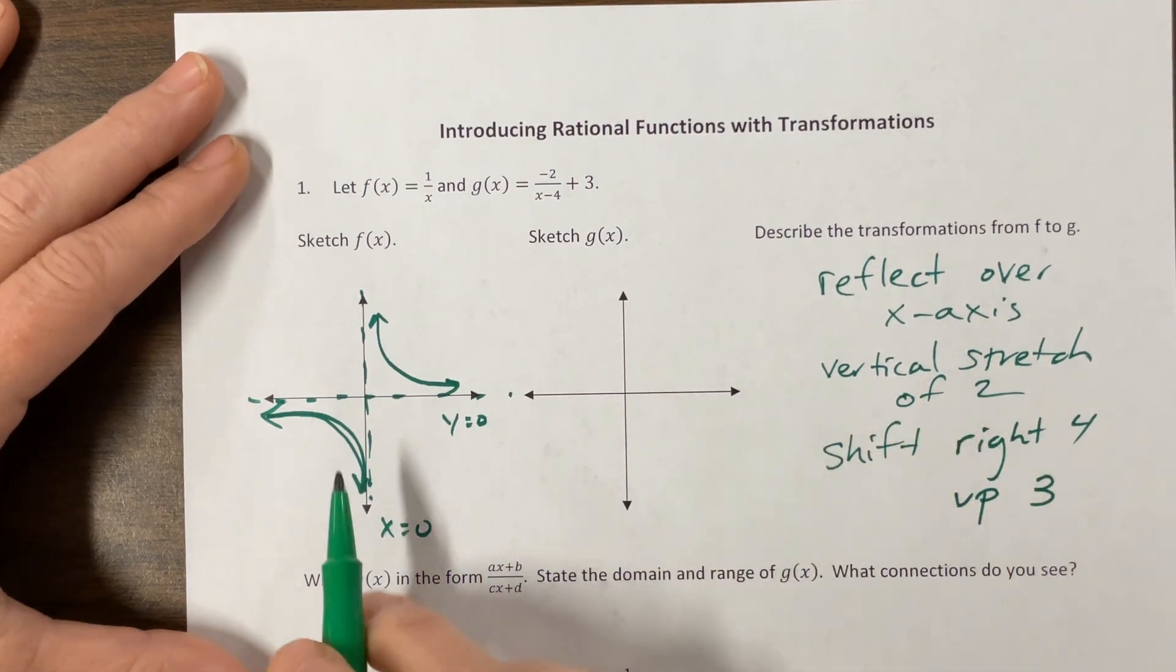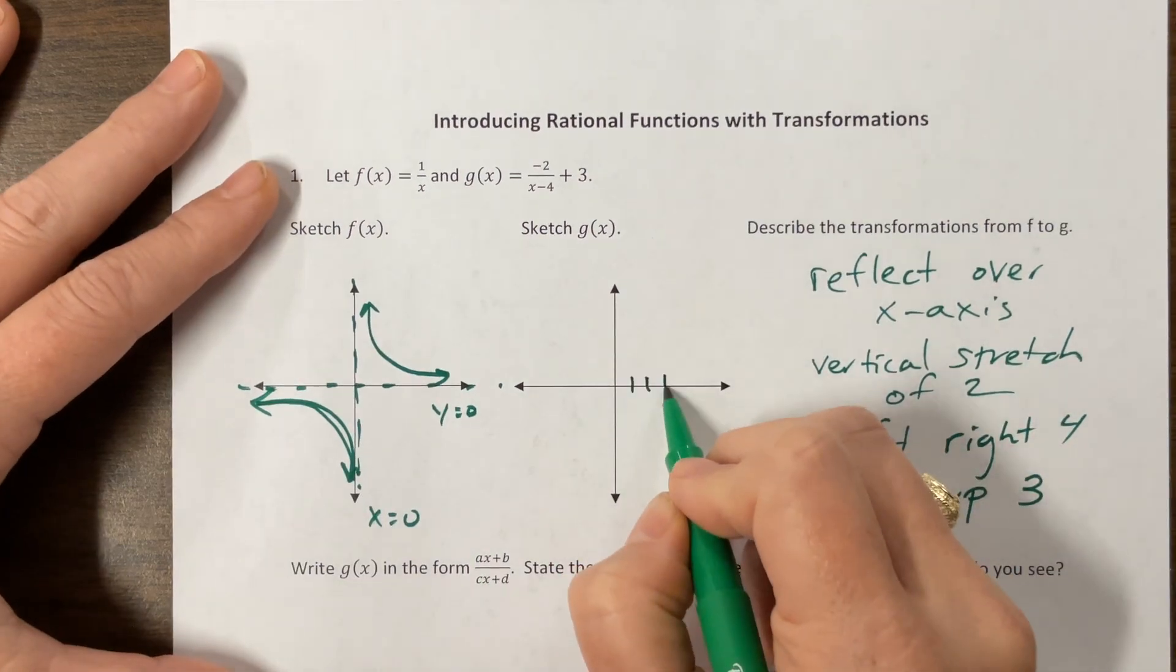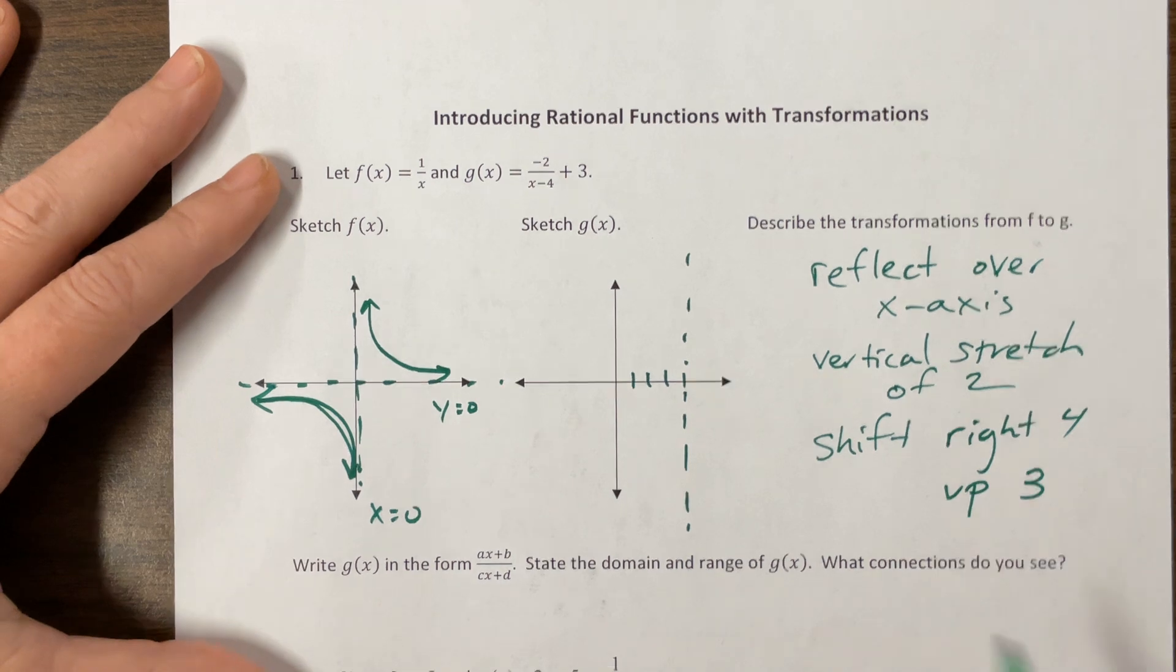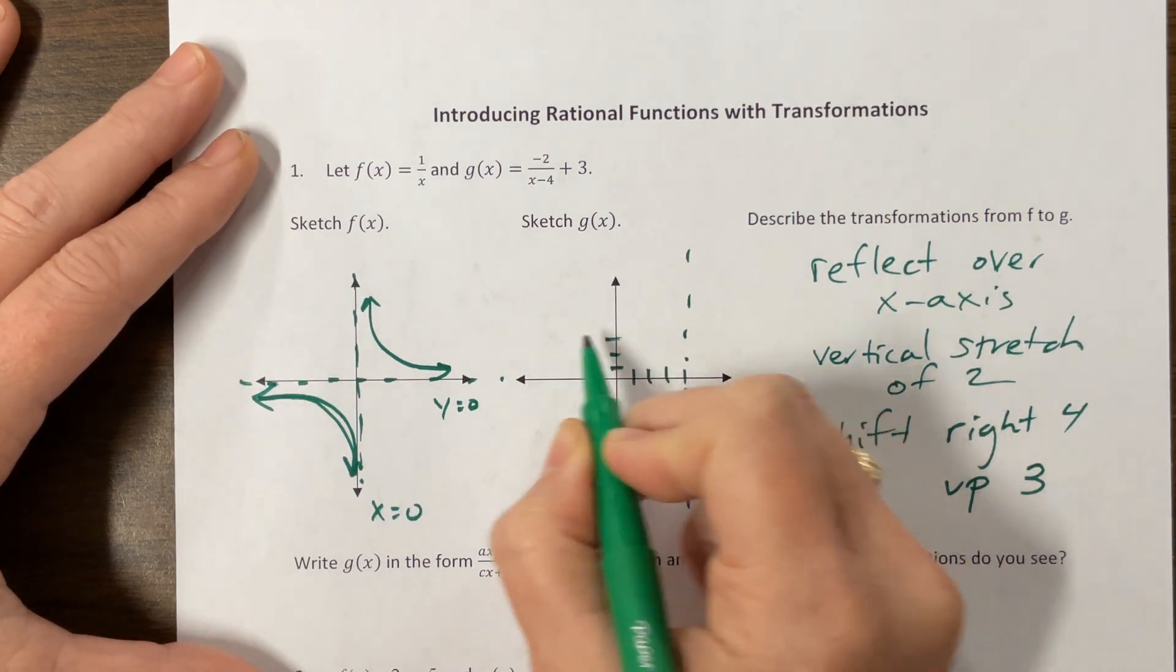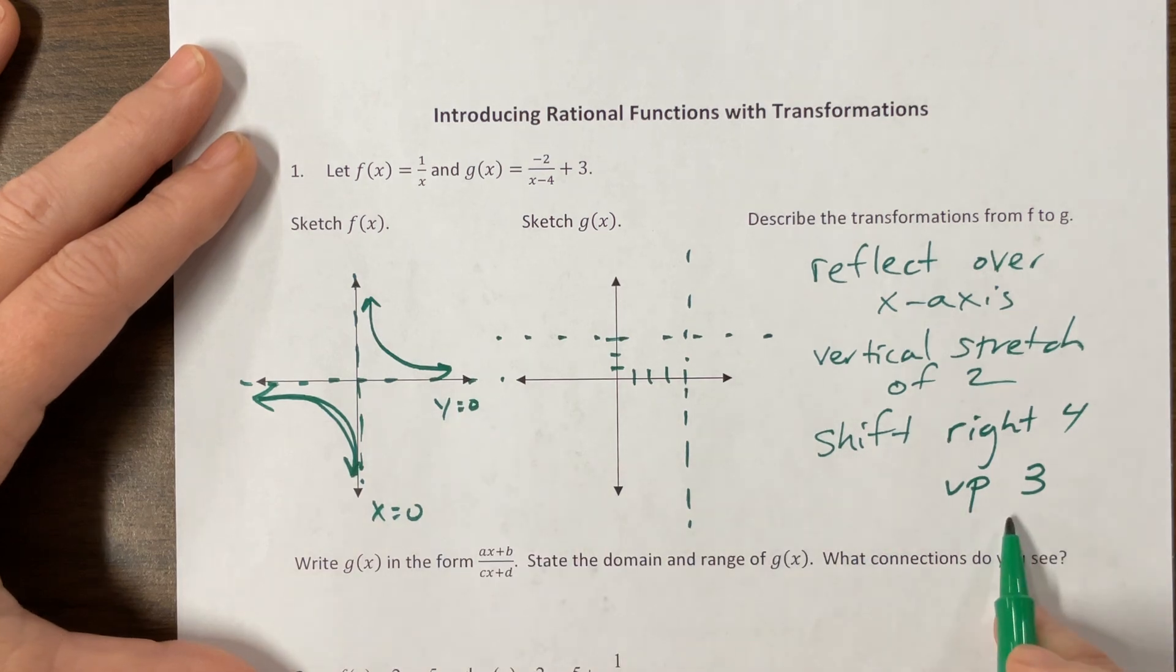Let's verify. So if I shift to the right 4 this asymptote that was at 0 goes to the right 1, 2, 3, 4. It doesn't work the same if you don't make the noises. And then we have this asymptote went up 3 and so there we go.